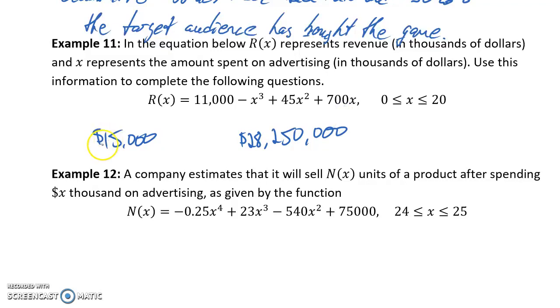So again, from zero to $15,000 in advertising, that company would be seeing the largest return on their investment in advertising, they would see the most rapid growth in their revenue. That point of diminishing returns would occur after $15,000 had been spent, and at that point they would have generated a little over $28 million in revenue. After that point, revenue will continue to increase, just not as quickly, they won't see as much return on the investment of those advertising dollars.